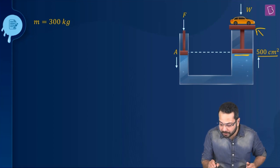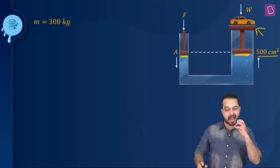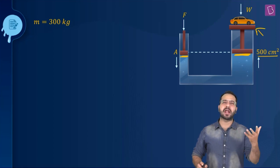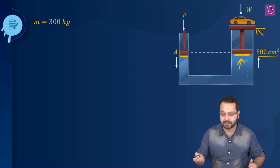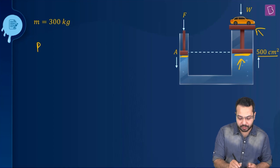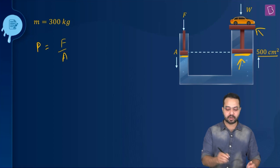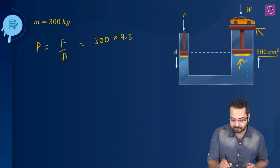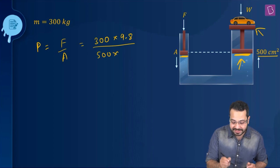Whatever is the pressure at the large piston, the same is going to be the pressure at the small piston. So the question is: at point A, what is the maximum pressure that this piston will have to bear? The answer will be the same as the pressure at the large piston, which is the force applied divided by the area. The force is equal to the weight of the car: M × g = 300 × 9.8, divided by area, which is 500 cm² = 500 × 10⁻⁴ m².